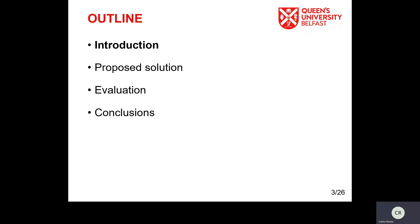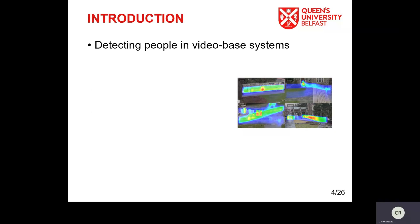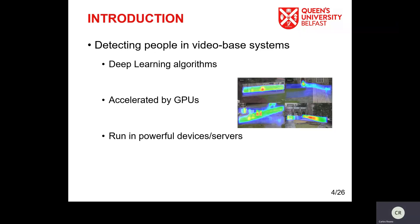Let's start with the introduction. In this work, we will be working with a use case of detecting people in video-based systems. Usually, in this kind of system, we use deep learning algorithms in order to detect people. There is a trend today of accelerating those algorithms by using graphic processing units, which reduces the execution time of these algorithms, and for this reason this technique is very widespread nowadays. Usually, those deep learning algorithms accelerated by GPUs are run in powerful devices or servers.